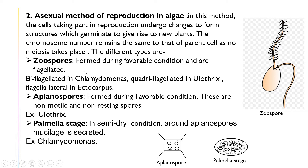The first type of asexual reproduction is zoospores. These are spores with flagella, formed during favorable conditions. Biflagellated zoospores are found in Chlamydomonas, and quadriflagellated zoospores are found in Ulothrix. Flagella can also be found laterally in Ectocarpus. These examples are important.